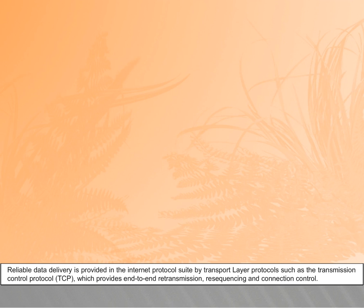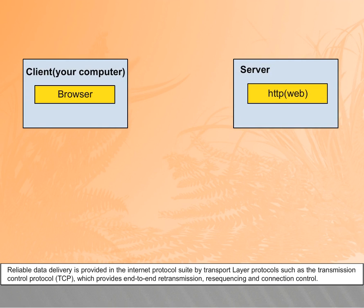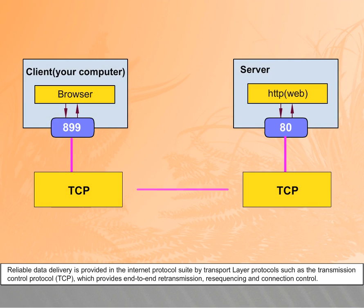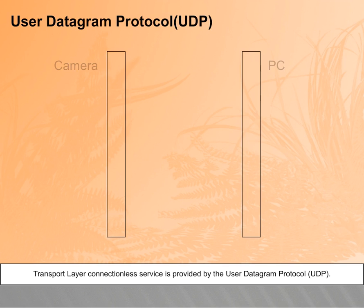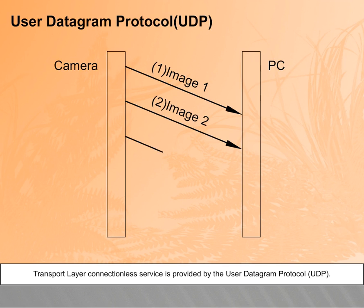Reliable data delivery is provided in the internet protocol suite by transport layer protocols such as the Transmission Control Protocol TCP, which provides end-to-end retransmission, resequencing, and connection control. Transport layer connectionless service is provided by the User Datagram Protocol UDP.